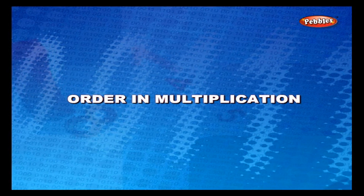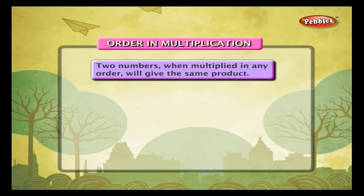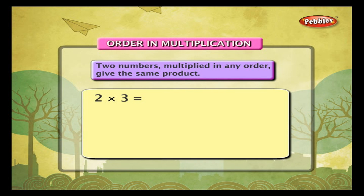Order in multiplication. Two numbers when multiplied in any order will give the same product. Example: 2 into 3 is equal to 6. When you interchange the numbers and multiply, 3 into 2 is also 6.